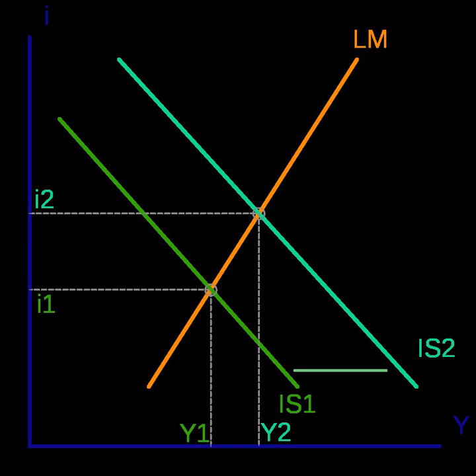I represents investment as a decreasing function of the real interest rate, G represents government spending, and NX represents net exports.